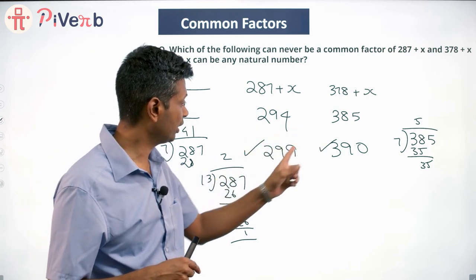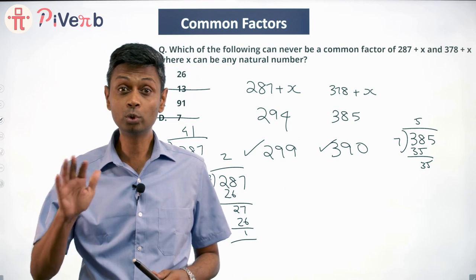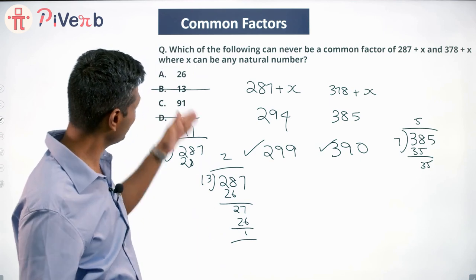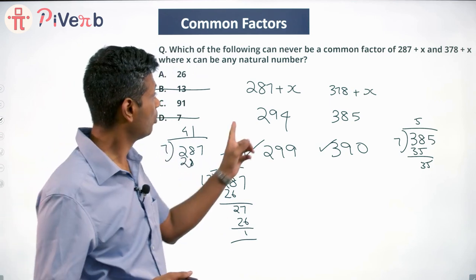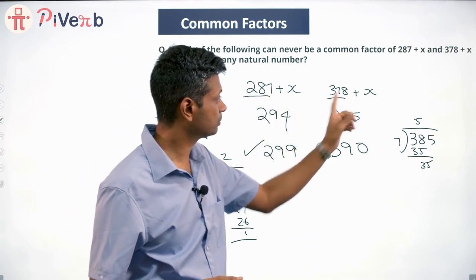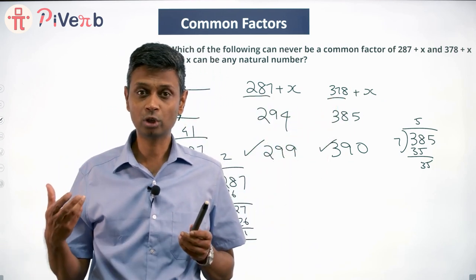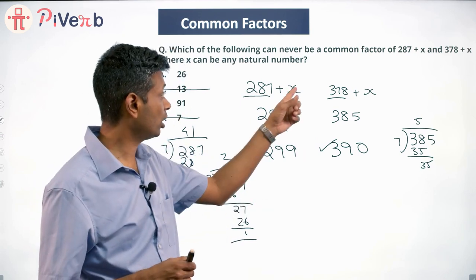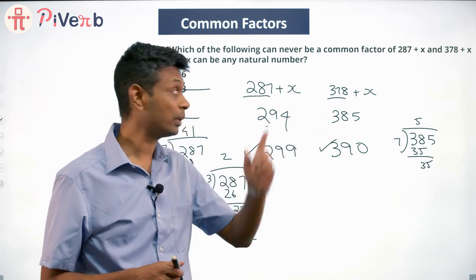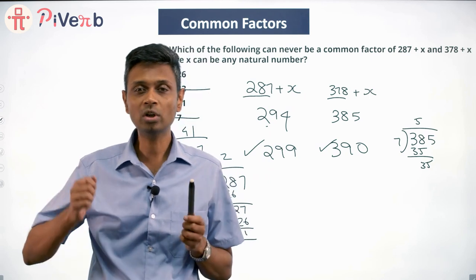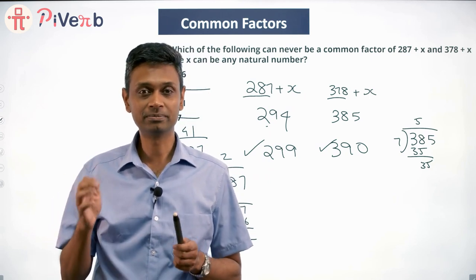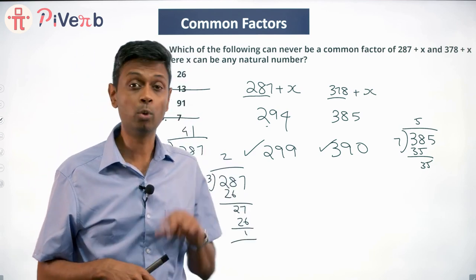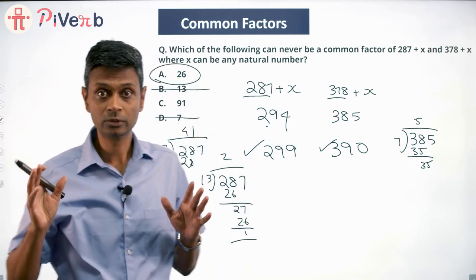Looking at 294, 385, 299, 390 — there's a beautiful pattern here. Even before going into the detailed solution, you can guess the answer very quickly. Think about this: 287 is odd and 378 is even. To both you're adding the same x. If x is odd, 287 + x becomes even and 378 + x becomes odd. If x is even, 287 + x is odd and 378 + x is even. So one of the two numbers is always odd and the other is always even.